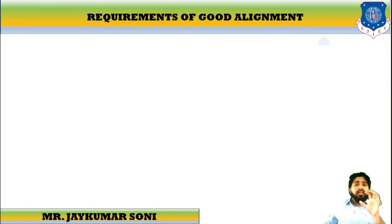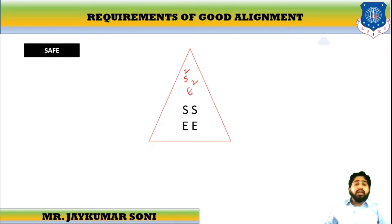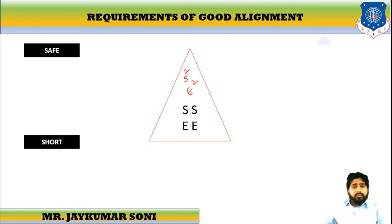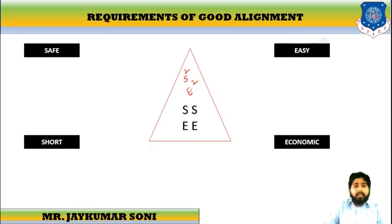There are requirements of good alignment. There is a method to remember this called S-squared E-squared, where the first S stands for Safe, the second S stands for Short, the first E stands for Easy, and the second E stands for Economic.